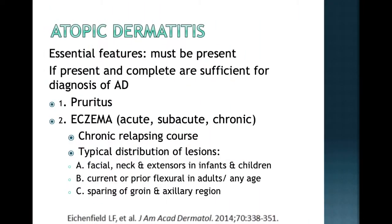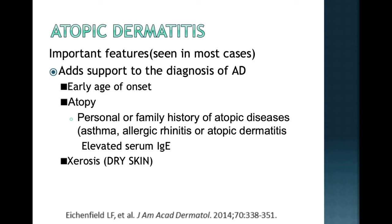Essential features for atopic dermatitis include: presence of pruritus as the hallmark; the disease is chronic and relapsing; and typical distribution of lesions — for infants it is facial, neck, and extensors, while for children and adults it is the flexural areas. Other important supporting features include early age of onset, presence of atopy (personal or family history of asthma, allergic rhinitis, or atopic dermatitis in a family member), elevated serum IgE levels, and the presence of dry skin or xerosis.